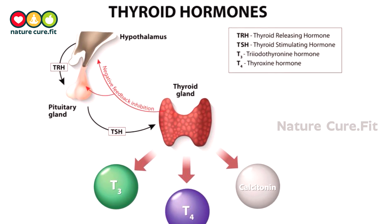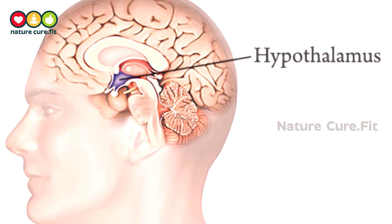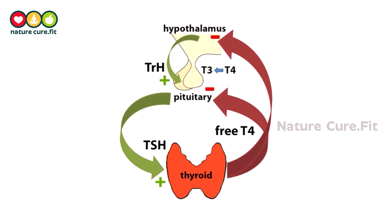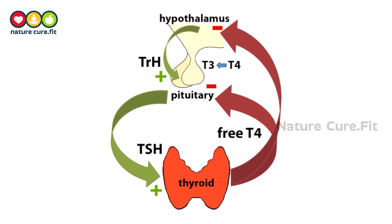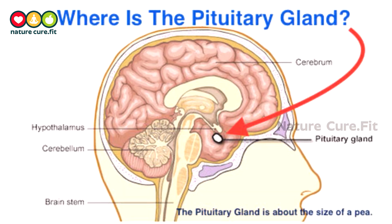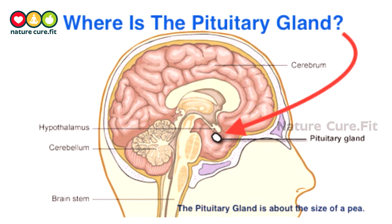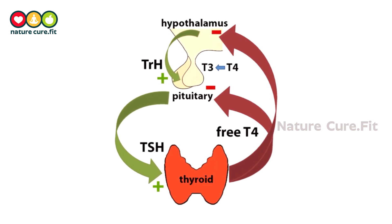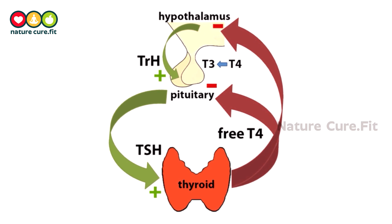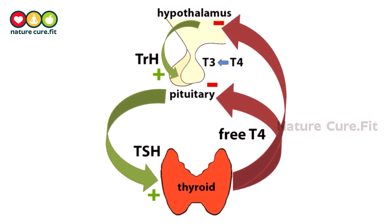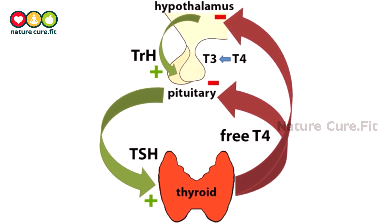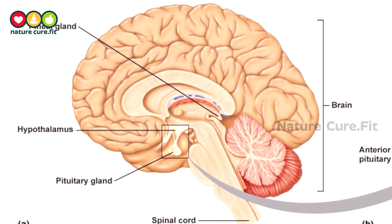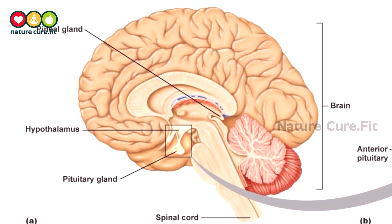When thyroid hormone levels are low, the hypothalamus in the brain produces a hormone known as thyrotrophin-releasing hormone. This causes the pituitary gland, located at the base of the brain, to release thyroid stimulating hormone, TSH. TSH then stimulates the thyroid gland to release more T4.